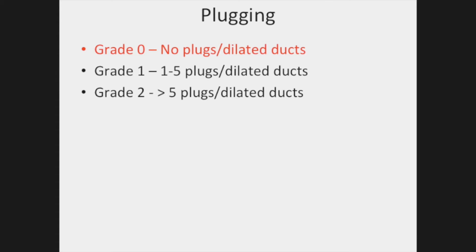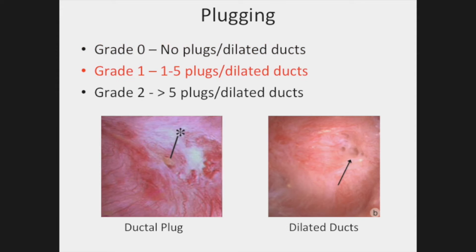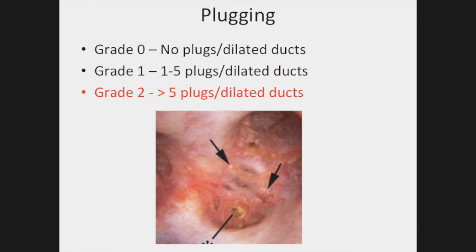A plugging score of zero is assigned when no mineral plugs or dilated ducts can be seen. A plugging score of one is assigned when one to five yellow mineral plugs or dilated ducts are visible. A plugging score of two is assigned when cumulatively greater than five yellow mineral plugs or dilated ducts are seen.